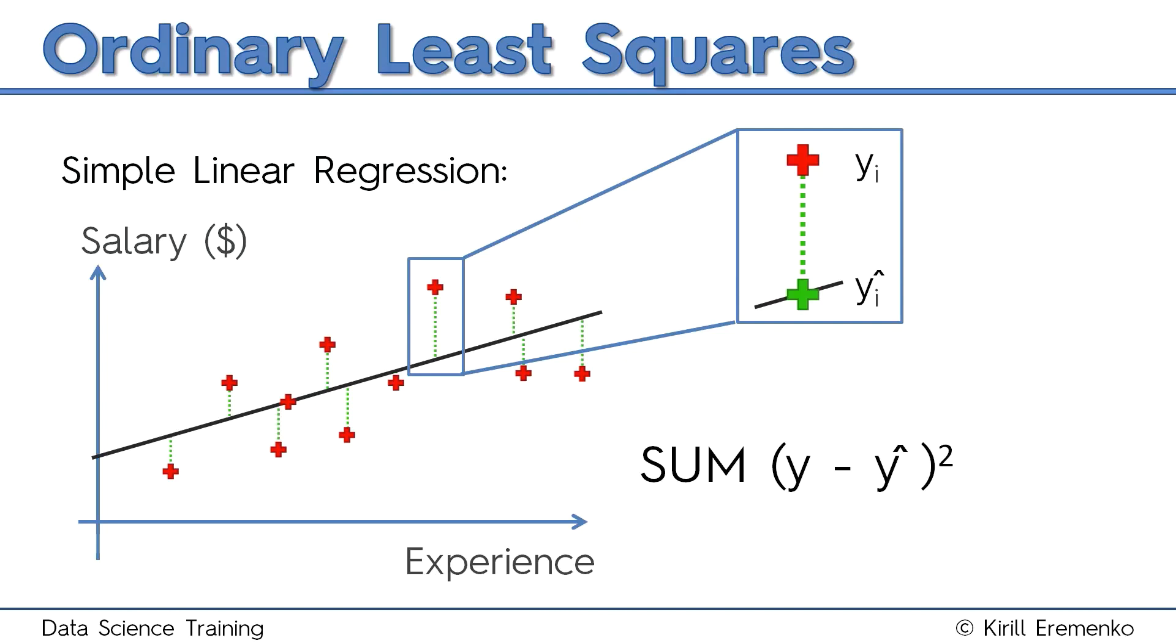Once you have the sum of the squares, you've got to find the minimum. So basically, what a simple linear regression does is it draws lots of these lines, these trend lines. This is a simplistic way of imagining it.